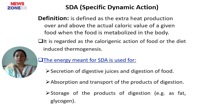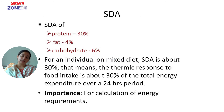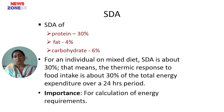The energy used for SDA goes toward secretion of digestive juices, digestion of food, absorption and transport of products of digestion, and storage such as fat and glycogen. The thermogenic effect is highest for protein at about 30%, fat is about 4%, and carbohydrate is about 6%. This is because protein digestion, absorption, and metabolic processing involves longer and more complex pathways.